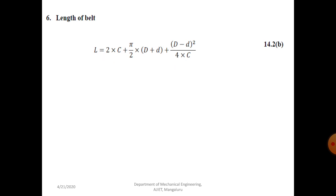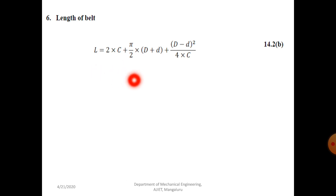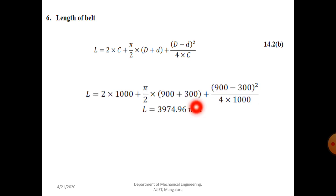The last step is to find the length of belt. If belt tensions were asked, you would follow the same procedure as flat belt drive. Use equation 14.2b for length of belt in V-belt: L = 2C + (π/2)(D + d) + (D − d)² / 4C. Substituting C = 1000 mm, D = 900 mm, d = 300 mm, we get L = 3974.96 mm. This is the length of the belt.